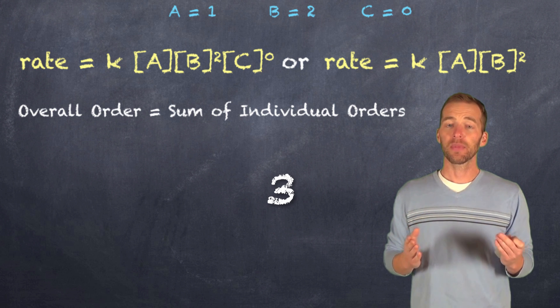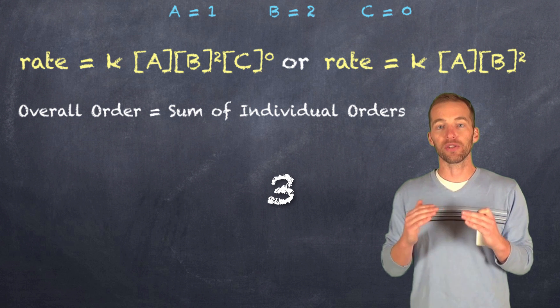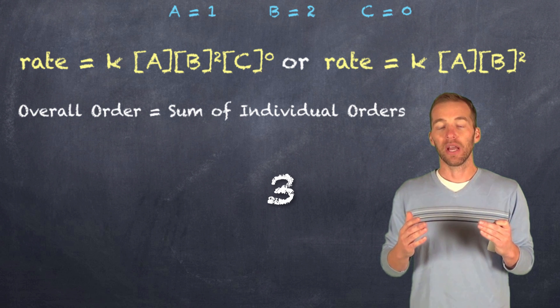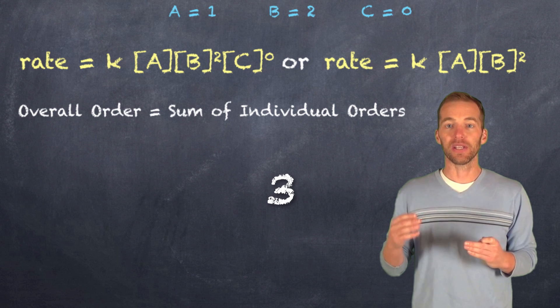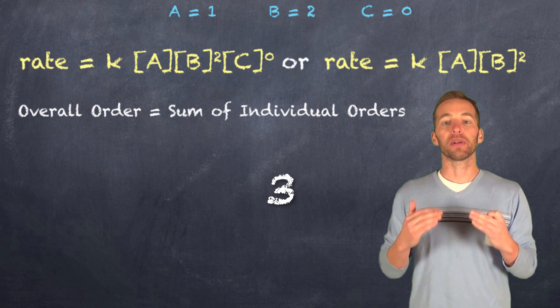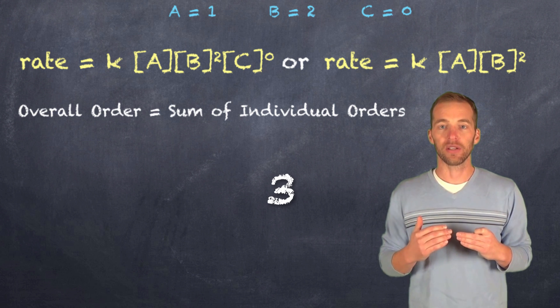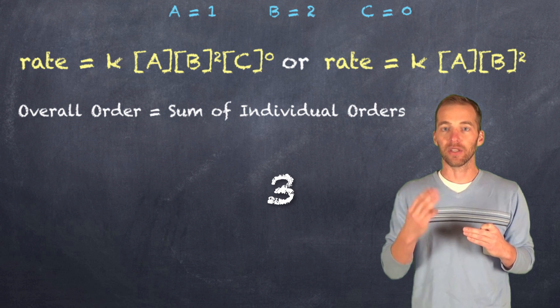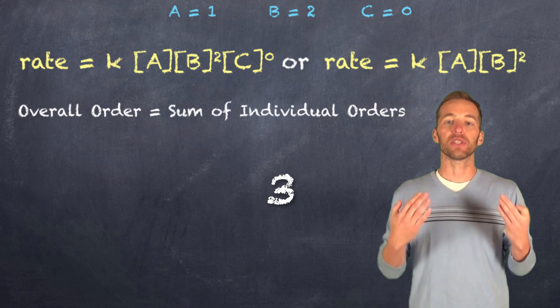But what does that mean to us? Well, anything that we do to the concentrations of our reactants now, in order for us to figure out rate, can be raised to the power of three. So if we were to double all of the concentrations of the reactants, we would get a doubling to the power of three, or an increase in the rate by a factor of eight.